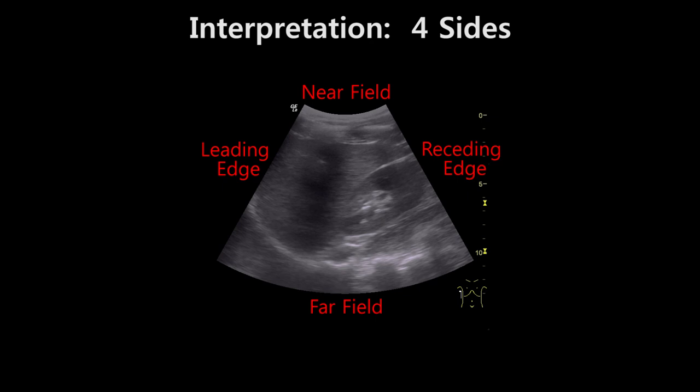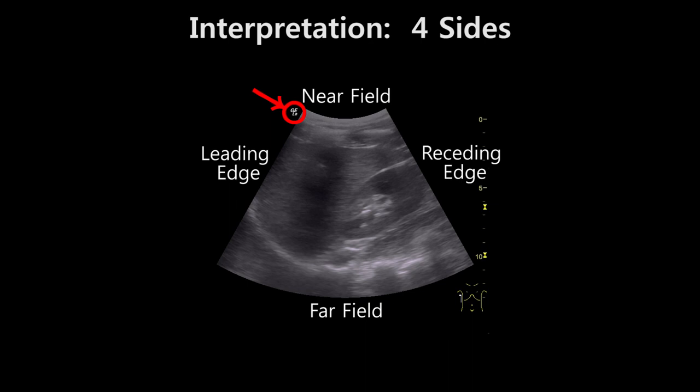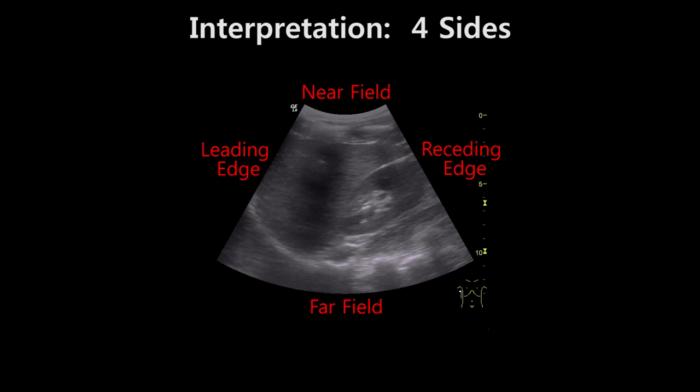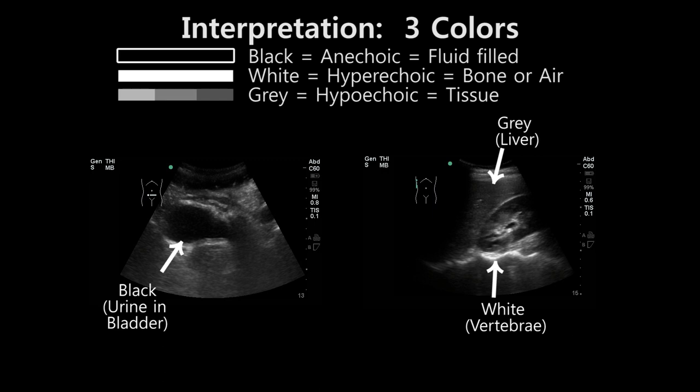Each probe is labeled or etched on one side to indicate the leading edge, represented on the screen by a dot or logo to help orient the user. Typically the leading edge on the probe is placed to the right or to the head of the patient, and the leading edge indicator on the screen is usually on the upper left corner. This results in axial images being viewed from the foot of the patient, like CT images. Sagittal images are viewed from the right side of the patient, with exceptions including cardiac imaging and ultrasound-guided procedures. As a basic rule of thumb, fluids will be anechoic or black; air such as bowel gas and bone will be hyperechoic or white; and tissues and organs will fall in between and be varying shades of gray.